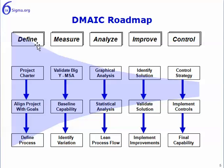Under each phase, we have three high-level activities that we need to accomplish before we move on — say, from the Define phase onto the Measure phase. For example, in the Define phase, we want to complete a project charter, make sure the project is aligned with other goals of the organization or departmental goals, and then define the process. In the Measure phase, we want to validate the big Y via MSA — a measurement system analysis — then baseline the capability of the process, and identify any variation.